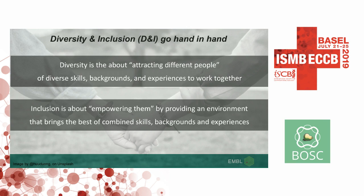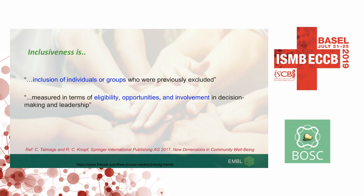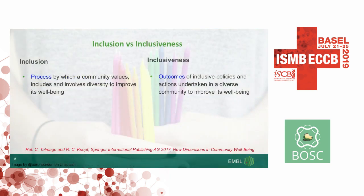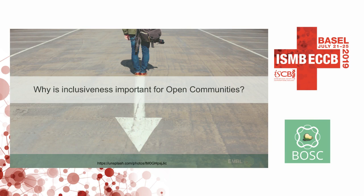Inclusion is about empowering these individuals so that they can combine their skills and get the best outcome. Then there's a third word: inclusiveness — which is inclusion of individuals or groups who were previously excluded. It is measured in terms of eligibility, opportunity, and involvement in decision making and leadership, and it is achieved when members are sharing and not competing for resources or power. Inclusion is a process; inclusiveness is an outcome of inclusion. Inclusion is providing access to community resources, whereas inclusiveness focuses on achieving heterogeneity at the community leadership level so they can make decisions beneficial for all stakeholders.